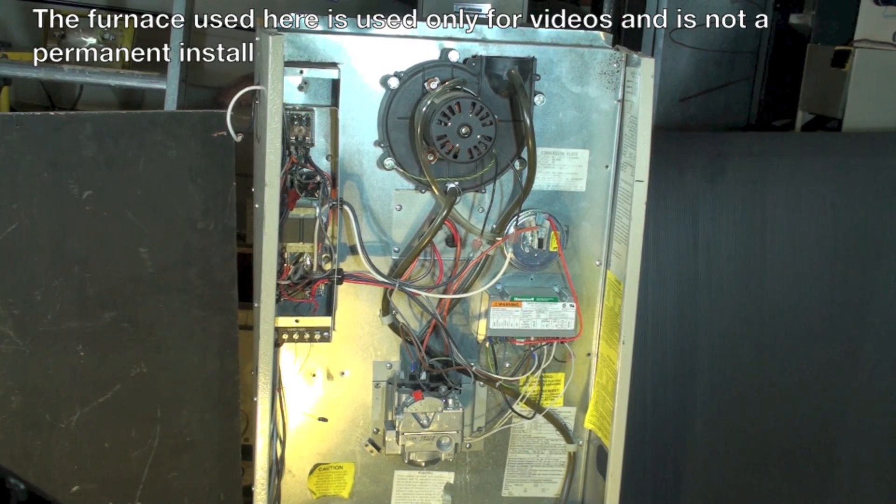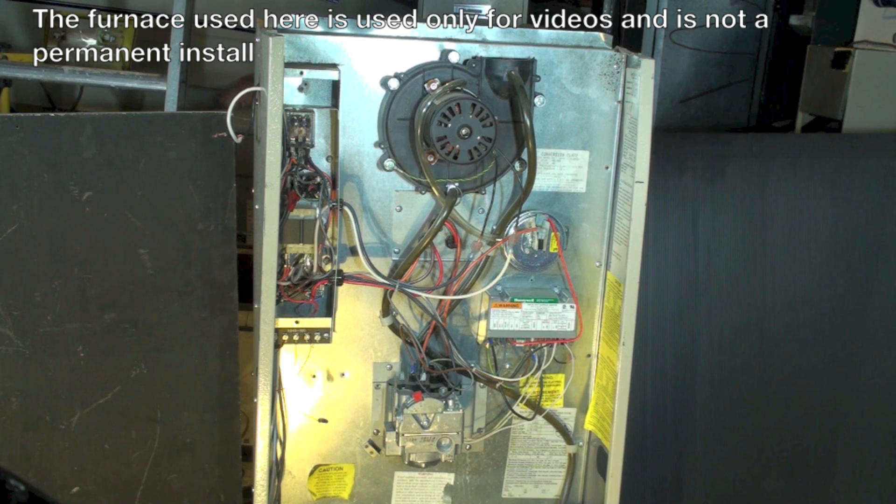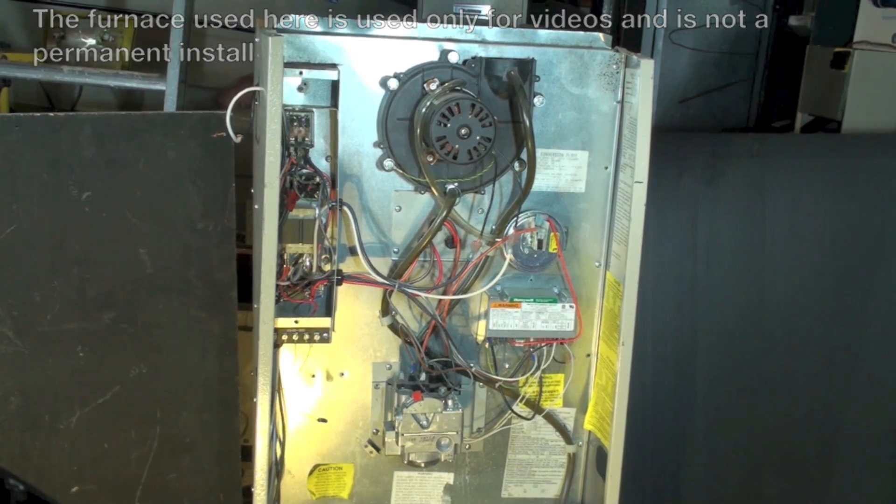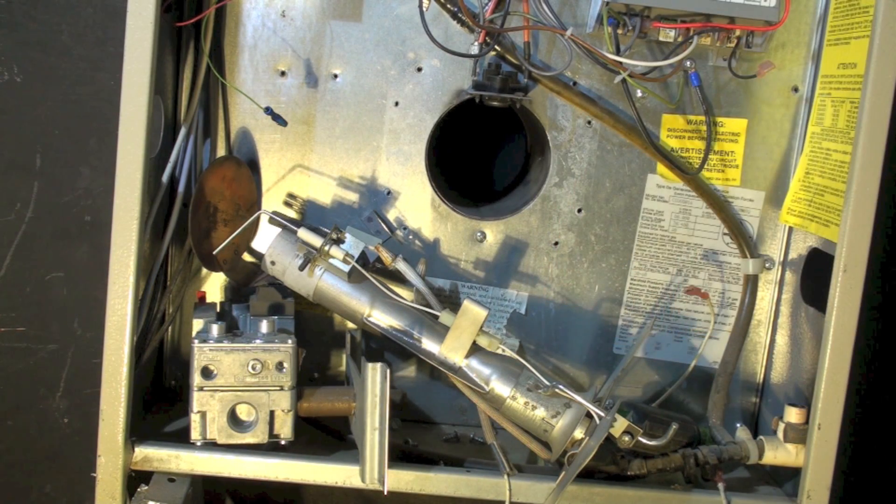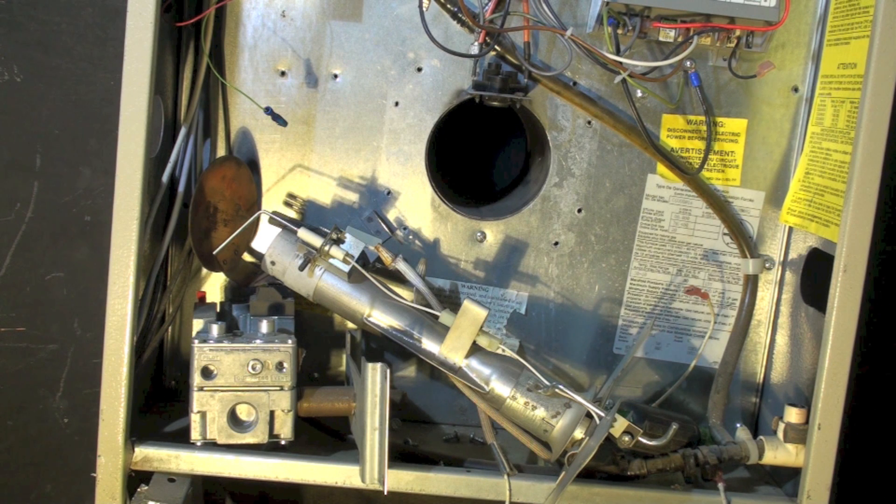Okay, we're back with our Coleman CGU furnace. I'm going to go over how we would check the heat exchanger in this furnace to see if there's any cracks. Here you got the gas valve and the burner all pulled out. Of course, we've shut off the power and we've shut off the gas so that we could remove the gas valve.